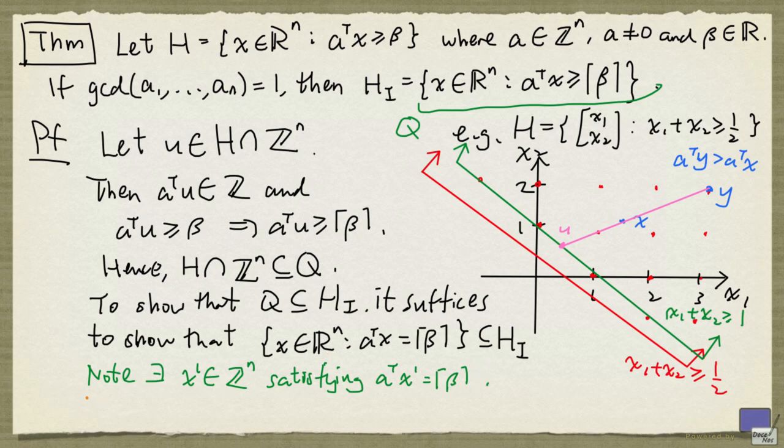Next, we're going to take a basis, d1 up to d(n-1), of the null space of a^T. Because the entries of a^T are integers, we may assume that d1 up to d(n-1) are rational. But since we are looking at the null space, we may clear all the fractions, and assume that d1 up to d(n-1) are integers.